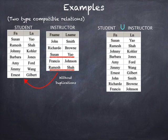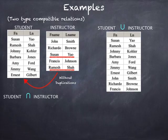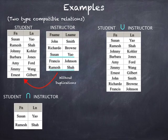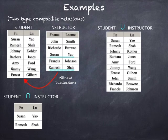The next operator is intersect. Student INTERSECT instructor retrieves the common records that exist in both tables. The result is a new relation with attributes FN and LN taken from the student relation. The two records retrieved are Susan Yao and Ramesh Shah, which are the intersection — records common to both tables.